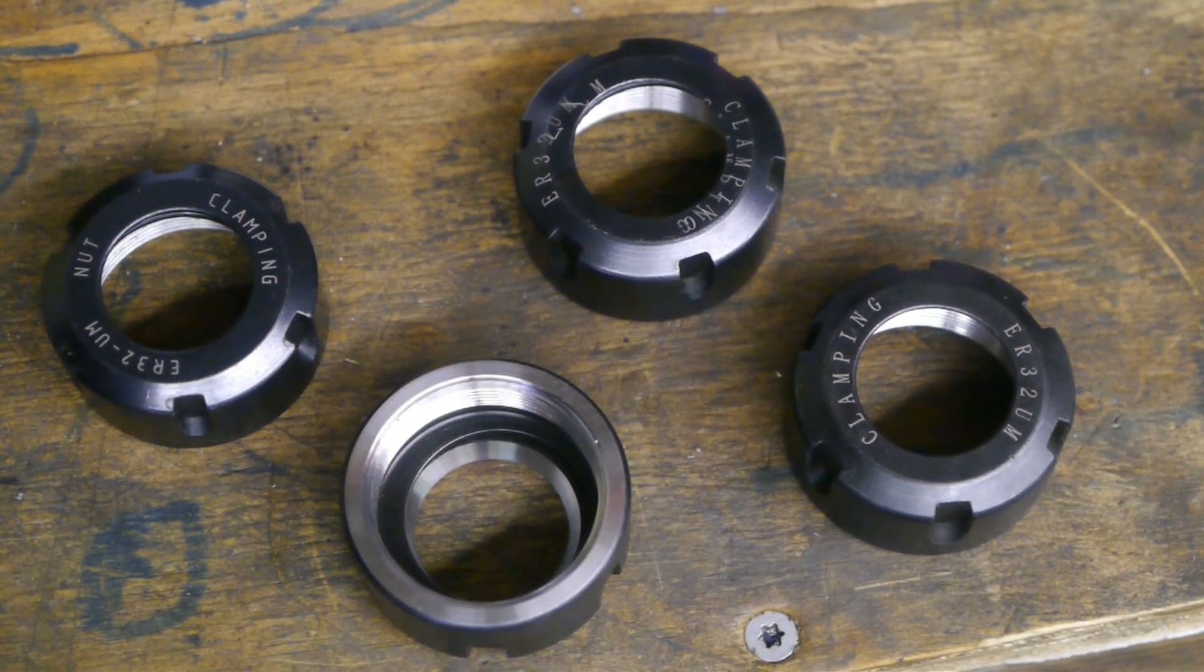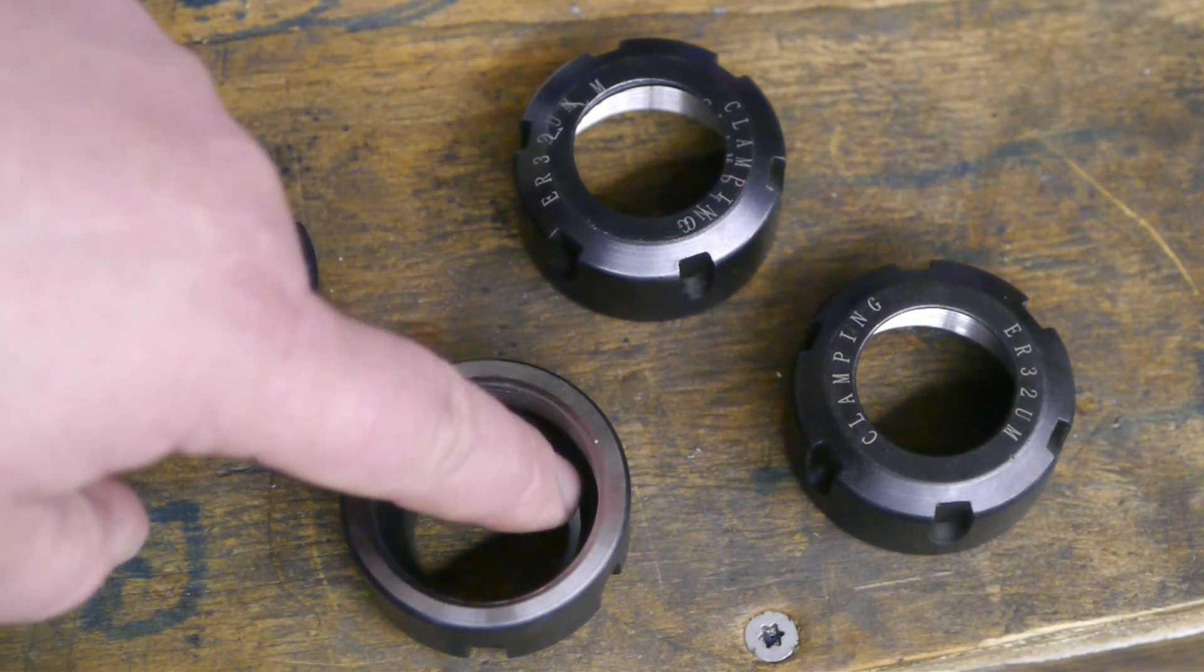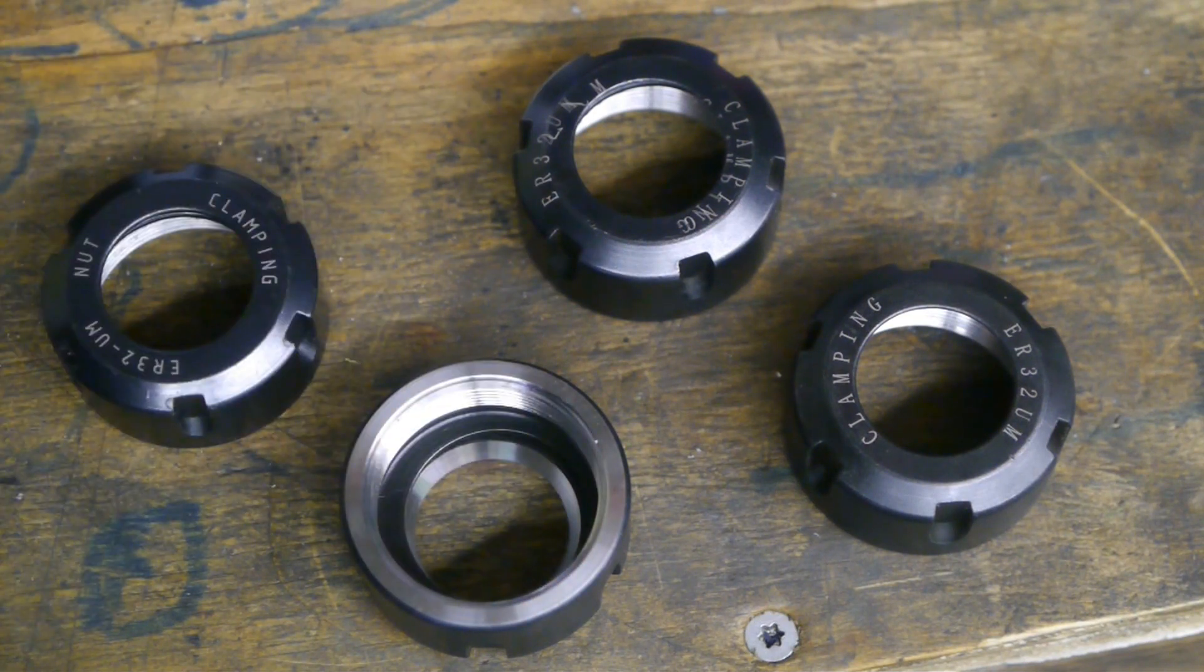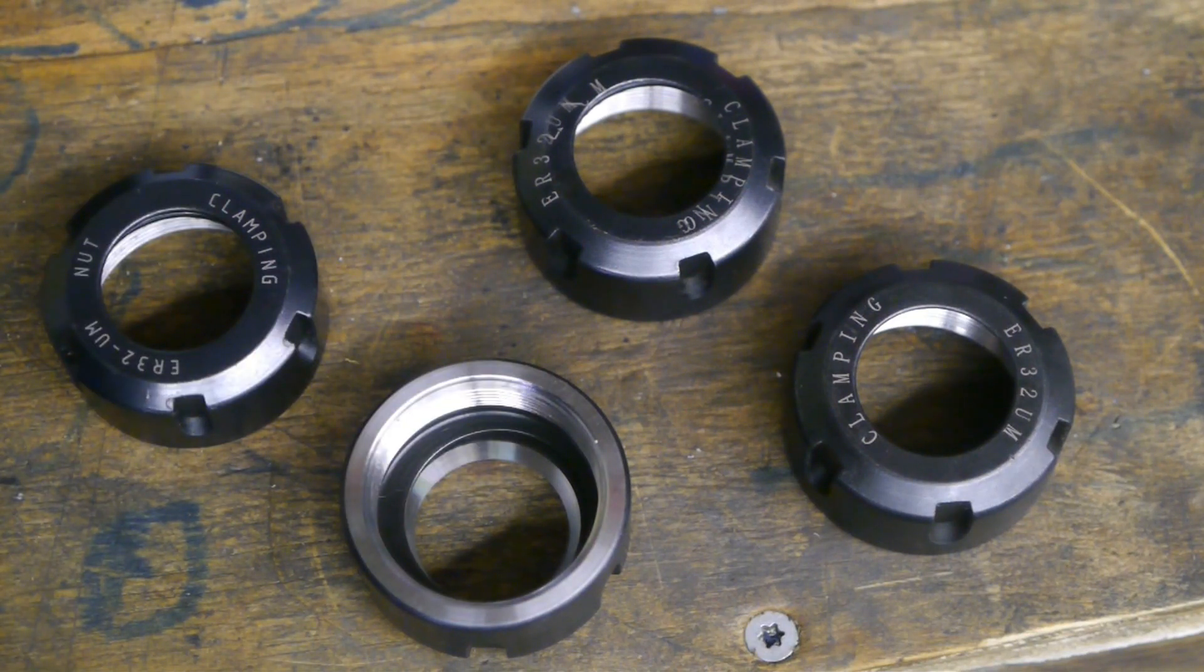According to one comment, the problem with these Chinese collet nuts is the offset lip here that pushes out the collet. According to him it's too small, so he bored it out to fix his run out problems. I've measured the opening here, and on all 4 collets it's about 32.5 or maybe 32.6 millimeters.